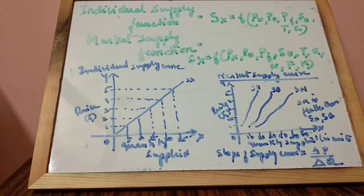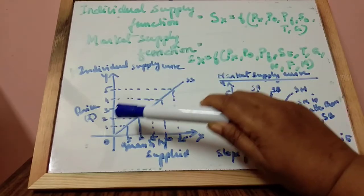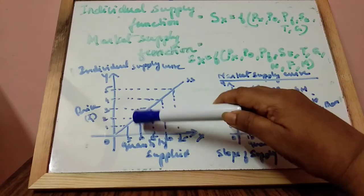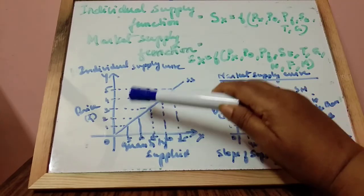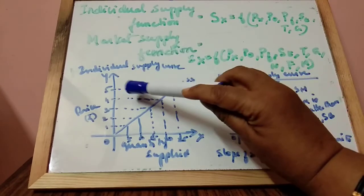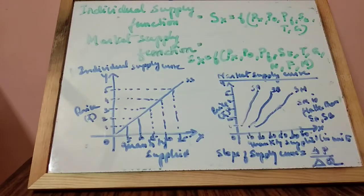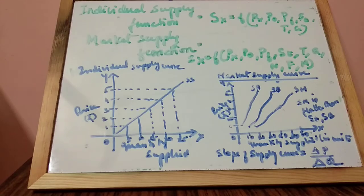Now we have a diagrammatic representation. Look at the individual supply: at Rs. 1, the producer supplies 5 units; at Rs. 2, 10 units; at Rs. 3, 15 units; at Rs. 4, 20 units; at Rs. 5, 25 units. This is the supply curve — when price increases, quantity supplied also increases, showing a direct relationship between price and quantity supplied, keeping other factors constant. The supply curve is drawn by plotting each combination from the supply schedule on a graph.